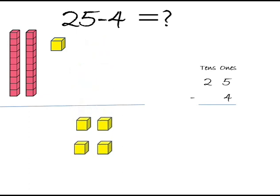Now count ones blocks left with us. So here 1 block left. That means 5 ones minus 4 ones is equal to 1 one. Count 10 rods. So here 2 tens rods left. That means 25 minus 4 equals 21.